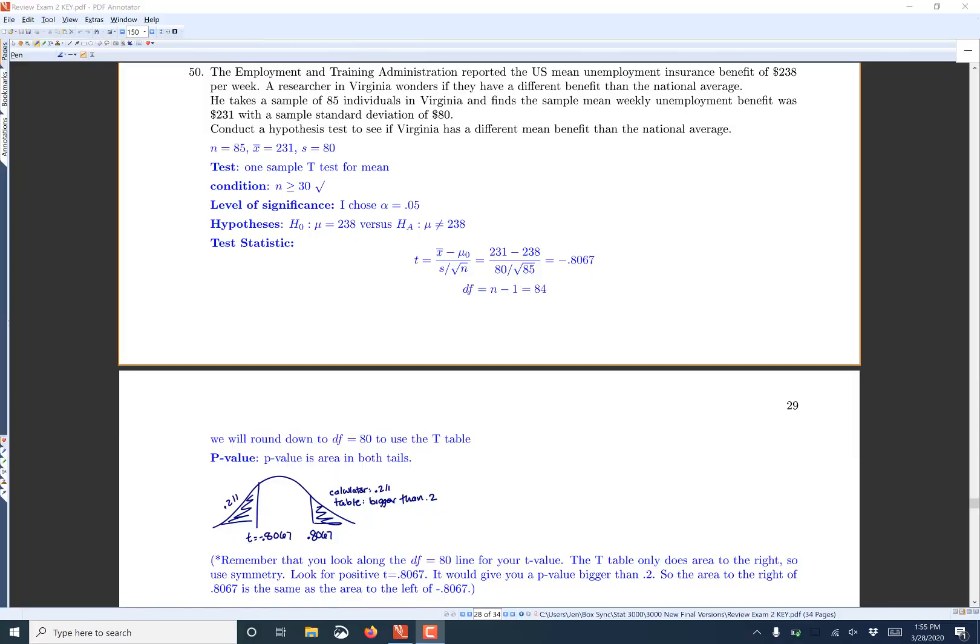Someone just said they wanted help on doing the t-table on this problem. So this was problem 50. We'll go through, we'll assume you're done on everything until you get to t equals negative 0.8067. And we need to look for the p-value. First of all, because this is a not equal to hypothesis, we will want the area in both tails.